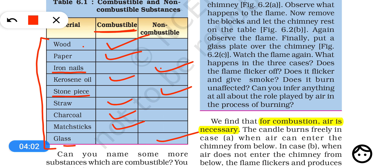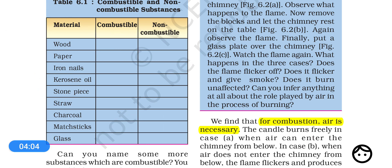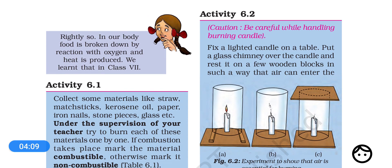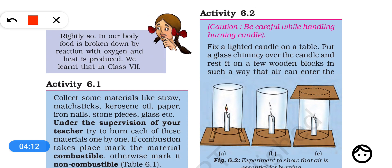We know that combustion is a process in which a substance reacts with oxygen. So for burning or combustion, oxygen is very important. From activity 6.2, we will come to know that for burning or combustion of anything, air is essential because air will give oxygen. If we want to burn something, we have to supply oxygen to it, otherwise it will not burn.